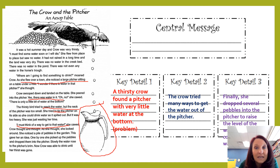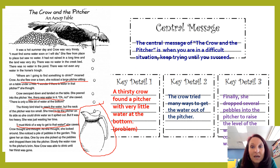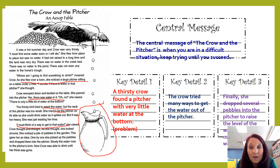Those are the three main key details that can help us determine the central message. If we think about what crow learned — she kept trying different ways to get water. So in order to make it a central message for us, what can we learn from this story? The central message of The Crow and the Pitcher is: when you are in a difficult situation, keep trying until you succeed — that means until you are able to get done what you wanted to do. Let's pause the video so you can fill out your graphic organizer with this information, and when you're done, push play to continue.